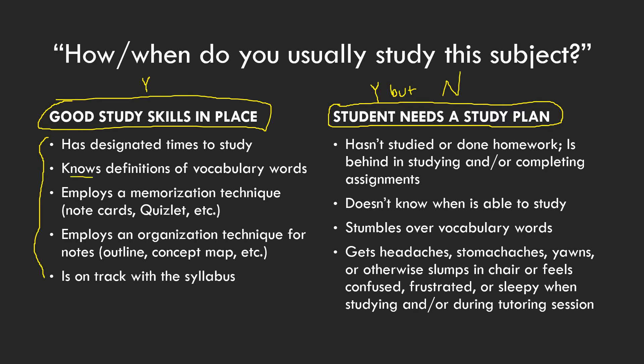Also, they know the definitions of vocabulary words. If the student reads out loud and stumbles over vocabulary words or glosses over them without understanding, they haven't looked them up. But if they can explain vocabulary words in their own words and read them without stumbling, that's an indicator they probably have good study skills in place.